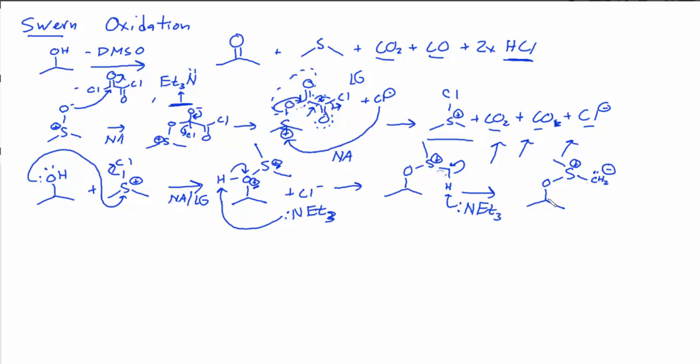And so finally, we know that all oxidations at some point have to involve the hydrogen that's on the carbon bearing the O. We need to lose that hydrogen. We need to form a CO double bond. And so now our molecule is well suited to do that. We can take the C minus, grab the hydrogen on the carbon bearing the O. That can be used to form the pi bond, and then we can lose dimethyl sulfide.